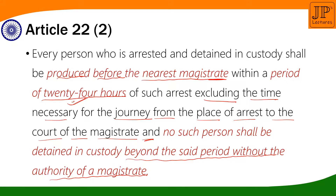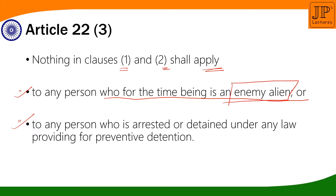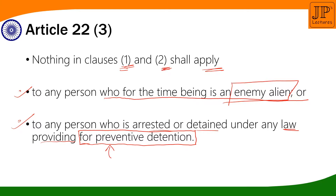The second part says that every person who is arrested and detained in custody shall be produced before the nearest magistrate within a period of 24 hours of such arrest, excluding the time necessary for the journey from the place of arrest to the court of the magistrate. No such person shall be detained in custody beyond the said time period without the authority of the magistrate. No person can be kept in custody more than 24 hours without the permission and authority of the magistrate. Clause 3 of Article 22 says that nothing in clauses 1 and 2 will be applied to an enemy alien or to any person who is arrested or detained under any law providing for preventive detention.